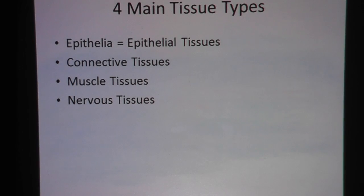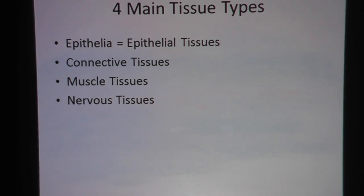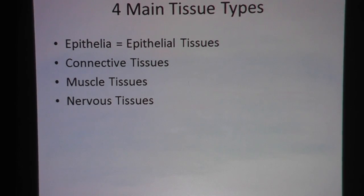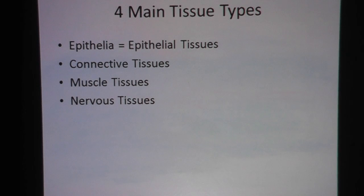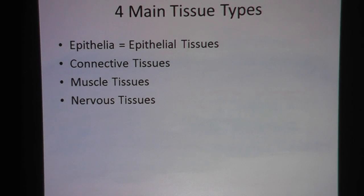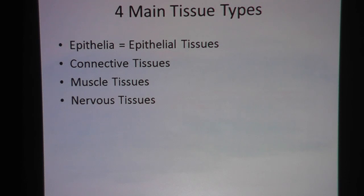Let's review. There are four main tissue types in the human body. Number one, we have something called epithelia, also known as epithelial tissues. Then there's connective tissues, there's muscle tissues, and nervous tissue.